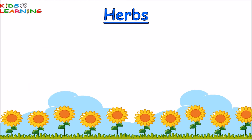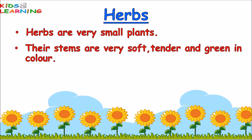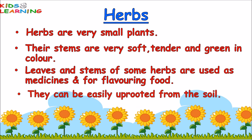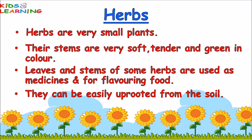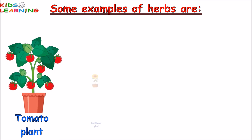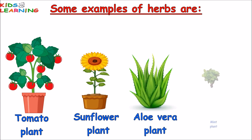Herbs. Herbs are very small plants. Their stems are very soft, tender and green in color. Leaves and stems of some herbs are used as medicines and for flavoring food. They can be easily uprooted from the soil. Some examples of herbs are the Tomato plant, Sunflower plant, Aloe vera plant, and Mint plant.